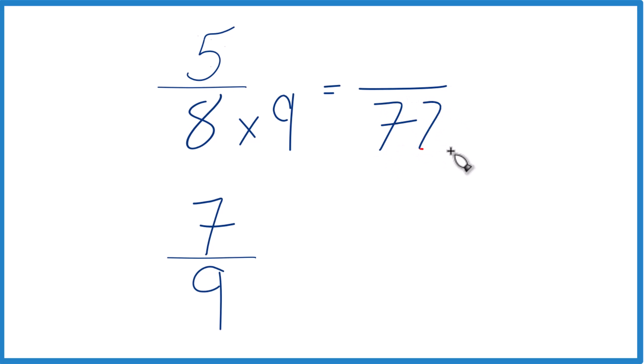Then down there on the bottom, I'll take 9 times 8, and that'll give me 72 as well. So now I have 72 as the denominators for both of these.